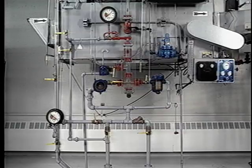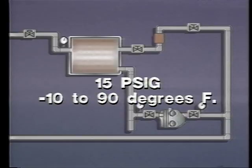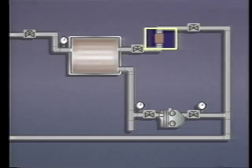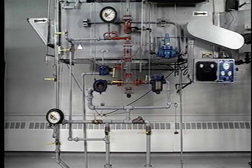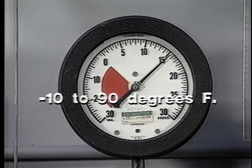Consider the operation of a typical coil during a hypothetical mild winter day. This coil was designed to use 15 PSIG steam to raise outside air from minus 10 degrees to 90 degrees Fahrenheit. The trap discharges into an atmospheric condensate return system. In addition, there is a thermostatic air vent located at the top of the coil opposite the inlet to aid in air removal during start-up and operation. Temperatures near the minus 10 degrees Fahrenheit design temperature require the full 15 PSIG steam pressure to provide the 250 degrees Fahrenheit steam necessary to produce a 100-degree temperature rise.